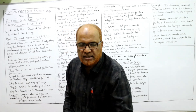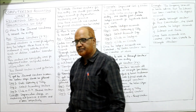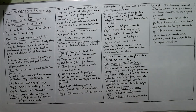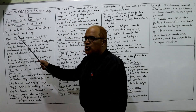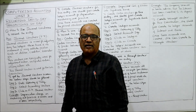Before starting this video, take a screenshot of the points I have written on the board, then I'll explain all the points in detail. The first question is: how to use journal voucher to record the entries?